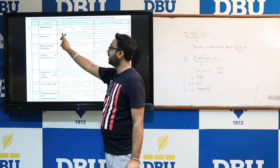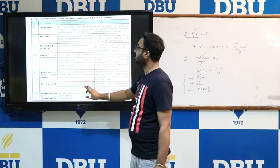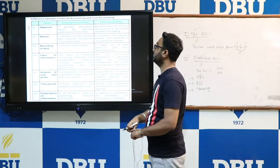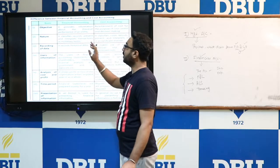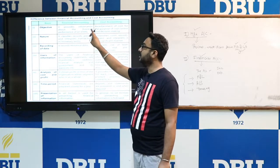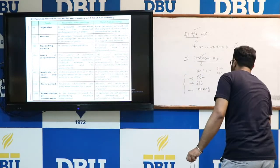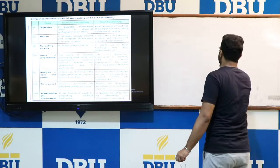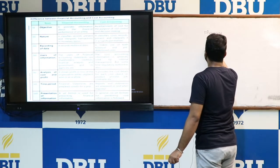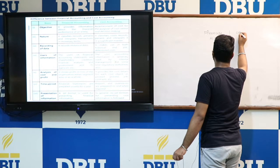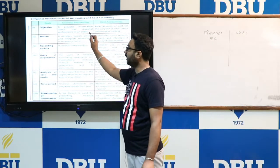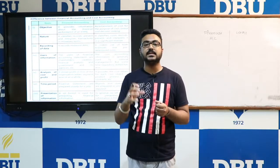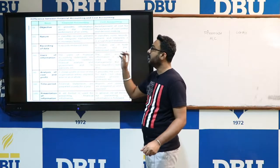The first basis of difference is objective. The main objective of financial accounting is to provide information about the financial performance of an entity. This financial performance is assessed by preparing the profit and loss account and balance sheet.